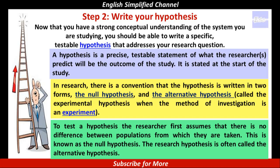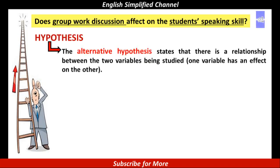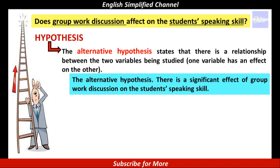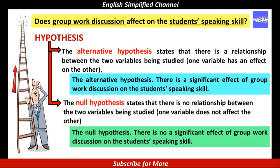Let's clarify this by an example: 'Does group work discussion affect the student's speaking skill?' The alternative hypothesis states that there is a relationship between the two variables being studied — one variable has an effect on the other. So, the alternative hypothesis: 'There is a significant effect of group work discussion on the student's speaking skill.' While the null hypothesis states that there is no relationship between the two variables — one variable does not affect the other. The null hypothesis: 'There is no significant effect of group work discussion on the student's speaking skill.'